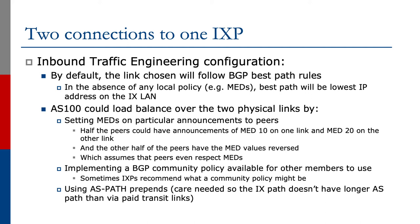Sometimes internet exchange points recommend what a community policy might be. We could try using AS path prepends, but we need to be careful because we don't want the IX path to be longer than that via paid transit links. Otherwise we could well end up with peering traffic coming over our expensive and possibly long-haul transit connections.